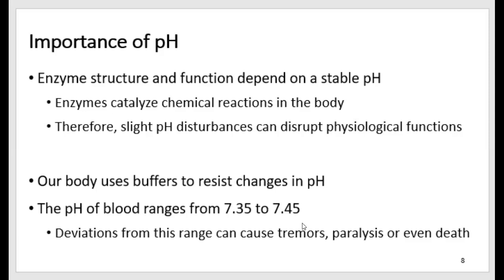Now to guard against changes in pH, our body uses buffer systems. Buffers are anything that can resist changes in pH. It could be a chemical or it could be an organ system. And I'll talk about that in just a minute. Buffers are particularly important in blood pH because the set point for pH of blood is very narrow. It needs to stay between 7.35 and 7.45. Deviations from this range in blood pH, like lower than 7.35 or higher than 7.45, can cause tremors, paralysis, and even death. Primarily because the nervous system is affected and that will change breathing.